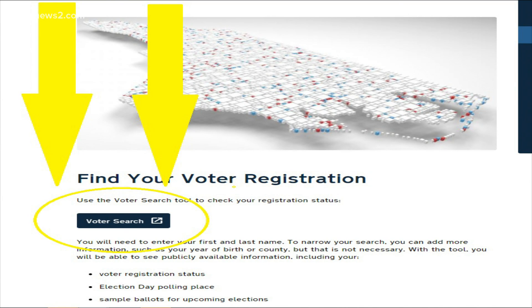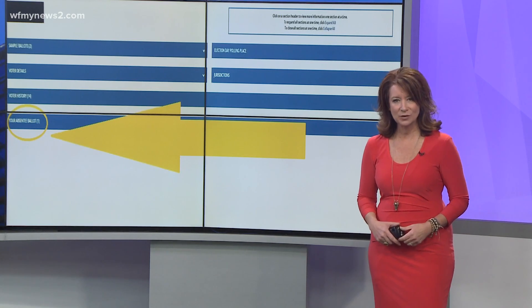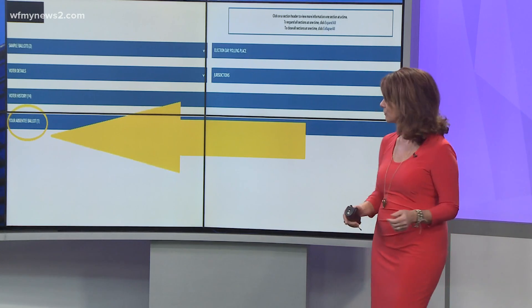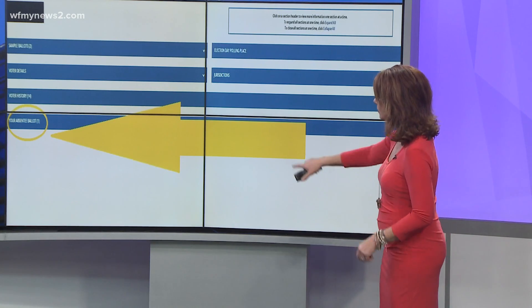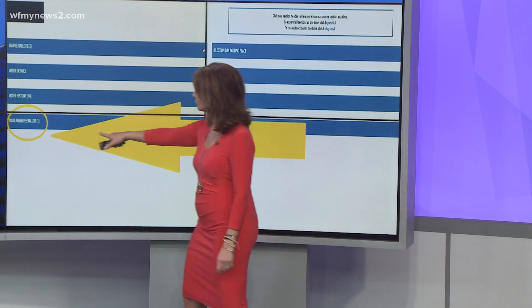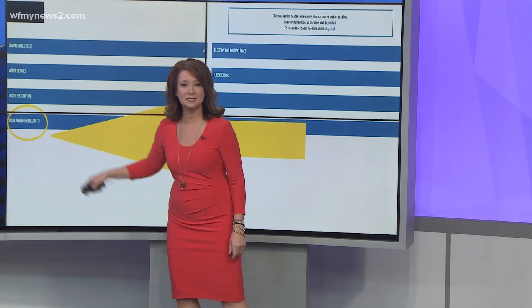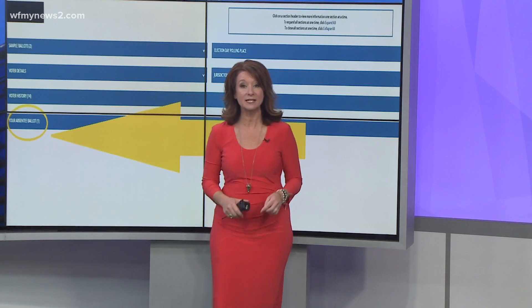When your name pops up, you're going to click it and then you're going to see on this screen — you're looking for something all the way to the right. I've got it circled here for you. It's called your absentee ballot.